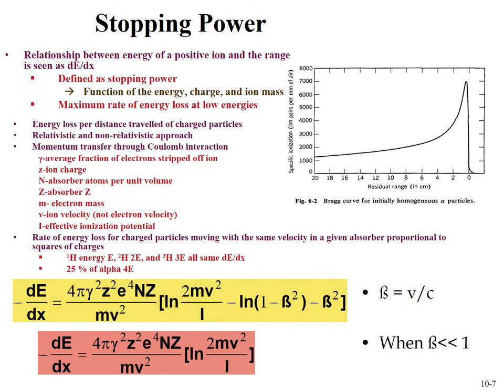There's a relationship between positive ion range and a quantity called stopping power — the change in energy over the change in distance. Stopping power is a function of energy, charge, and ion mass, and describes a maximum rate of energy loss that occurs at low energies. This is described by the Bragg curve, which shows the number of specific ionizations as a function of depth. There's a relatively small amount of ionization initially, which increases and then peaks greatly at the Bragg peak, after which no more ionizations occur.